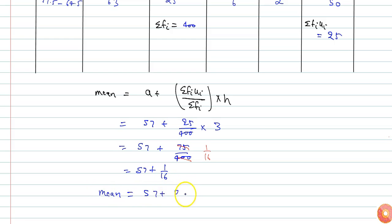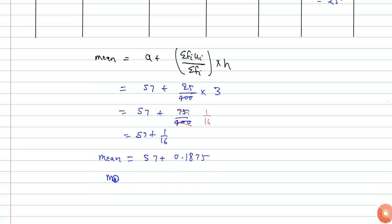So mean will be 57 plus 1 by 16. So I can say 57 plus 0.0625, so it will be 57.1875. This will be our answer.